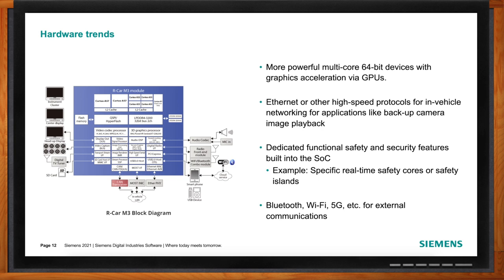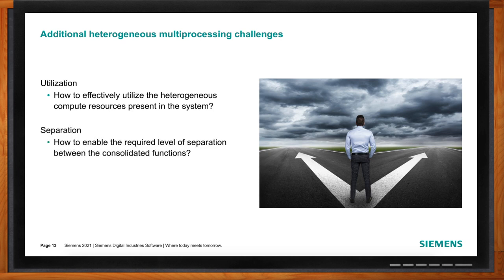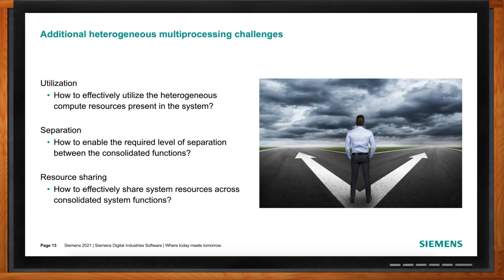We need a different way of managing that, which this kind of hardware provides. What are the specific challenges of heterogeneous multi-processing? How do I separate safety functions from the rest of the system and enable the safety function to manage the non-safety function if something goes wrong? How do I share resources — the safety system needs to communicate with and look at the memory of the non-safe system, and force a state transition if something has gone wrong?